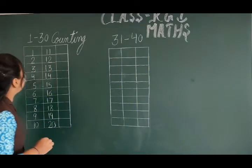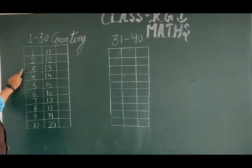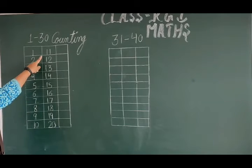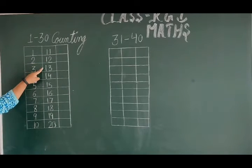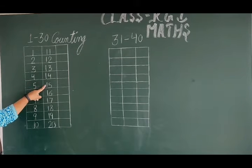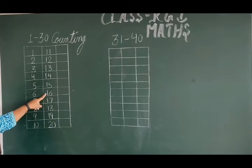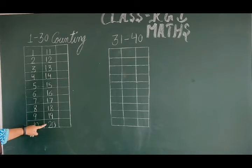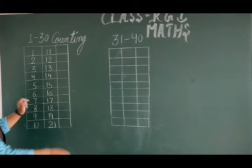Count with me. 1, 2, 3, 4, 5, 6, 7, 8, 9, 10. 1, 1, 11. 1, 2, 12. 1, 3, 13. 1, 4, 14. 1, 5, 15. 1, 6, 16. 1, 7, 17. 1, 8, 18. 1, 9, 19. 2, 0, 20. Now,